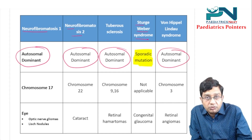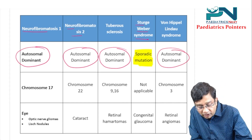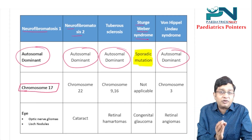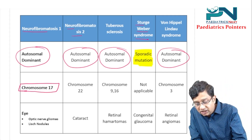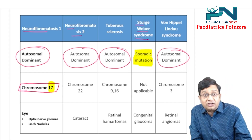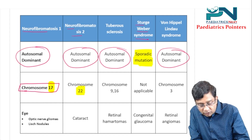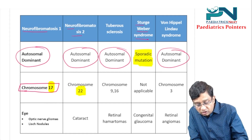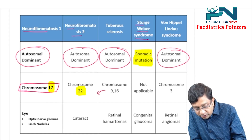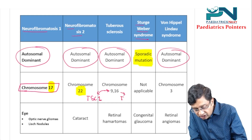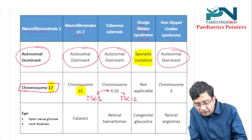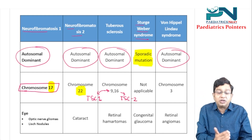You need to remember the chromosome numbers. NF1 is chromosome 17 — count the number of letters in 'neurofibromatosis': 17 letters, so you can easily remember chromosome 17. NF2 is chromosome 22. Tuberous sclerosis has two genes: TSC1 is located on chromosome 9, and TSC2 is located on chromosome 16.